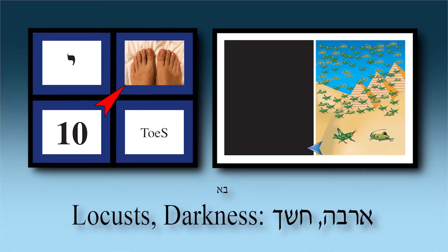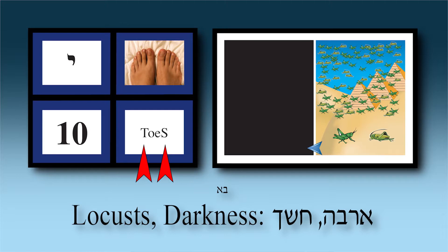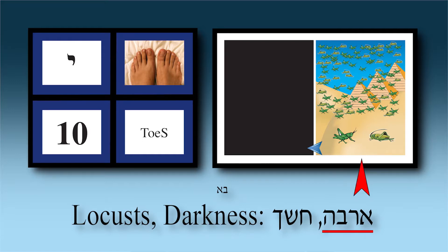Chapter ten — the simon is 'toes,' not because it rhymes but because we've switched to the more sophisticated system where English letters represent numerical values. T is 1, S is 0 — T and S, that's 1 and 0, that's ten. The vowels O and E in 'toes' have no numerical meaning. So in chapter ten — toes — you see two pictures: locusts (Arbeh) and darkness (Choshech).